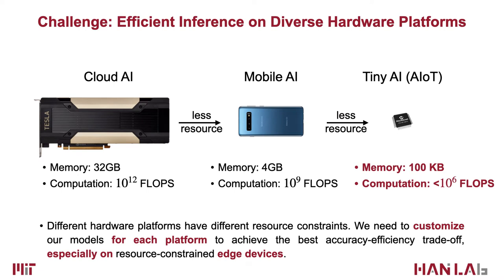Efficient inference is crucial, especially on resource-constrained edge devices. Different hardware platforms have different properties and computational resources, from cloud servers with trillions of flops per second, to mobile phones and microcontrollers that have orders of magnitude lower computation and memory. It's critical to customize neural networks to fit different hardware.